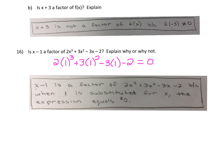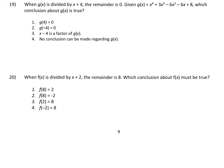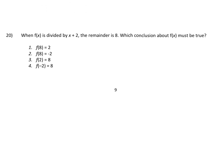Let's turn to number 20. When f(x) is divided by x plus 2, the remainder is 8. The remainder theorem says we substitute negative 2 in for x, so this tells us f(−2) is equal to the remainder. Since the remainder is 8, f(−2) = 8. That's the answer — it's just making sure you understand what the remainder theorem says: when you plug in the number with the opposite sign of what we see, it equals the remainder.